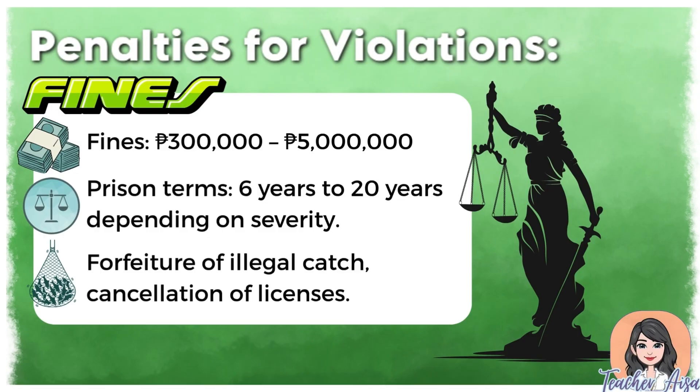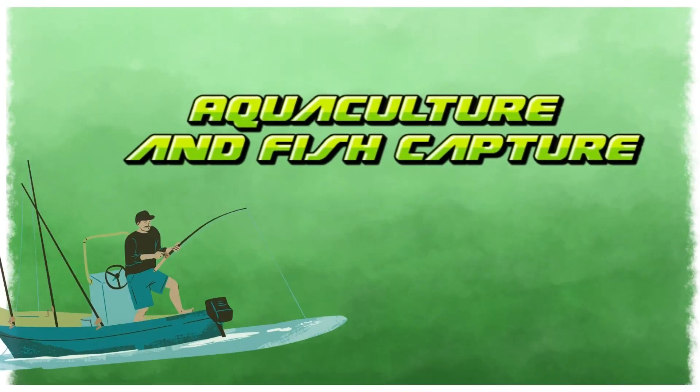Republic Act No. 10654 imposes strict penalties on those who violate fisheries laws to discourage illegal, unreported, and unregulated fishing. Offenders may face fines ranging from 300,000 pesos to as high as 5 million pesos depending on the gravity of the offense. Violators can also be sentenced to prison terms of 6 to 20 years, and the law provides for forfeiture of illegally caught fish and cancellation of licenses or permits.